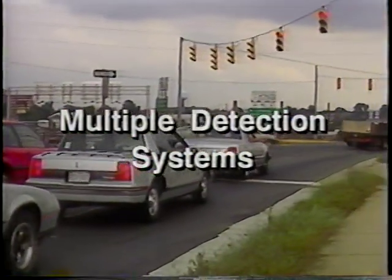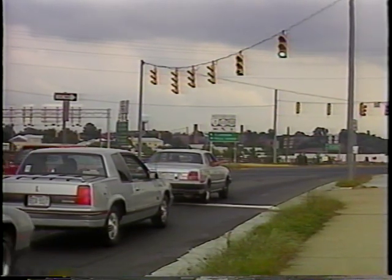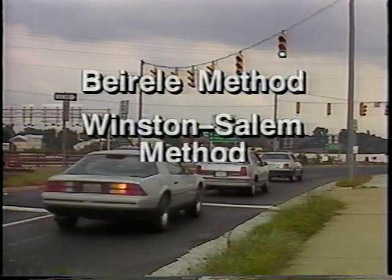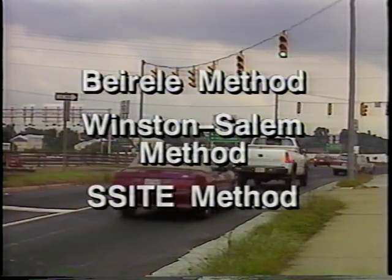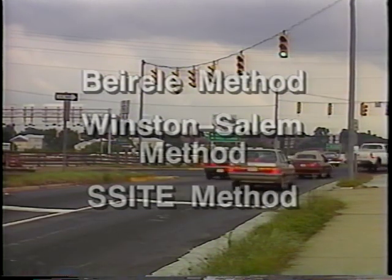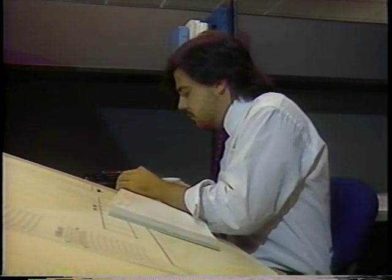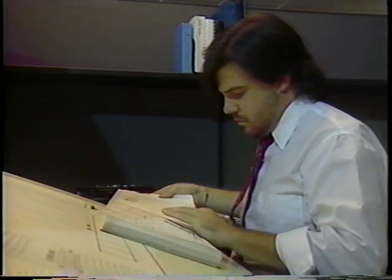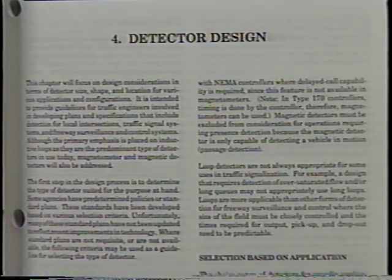Unlike the last two systems that are successful predominantly in low speed situations, multiple detection systems accommodate a wide range of approach speeds. The three commonly used techniques for determining the placement of multiple detectors — the Beyerly method, the Winston-Salem method, and the southern section of ITE method — are discussed in detail in your handbook. They differ primarily in the number of loops used and in the spacing of the loops. During the design process, you may require information concerning special applications such as bicycle detection or vehicle counting, or you may want information about magnetometer and magnetic detector configurations — please consult chapter four of your handbook for this information.